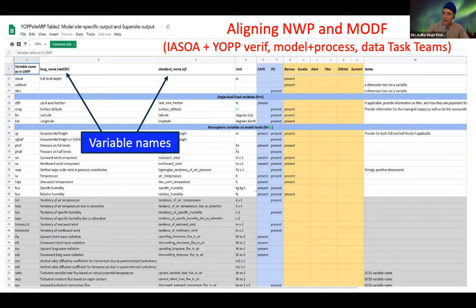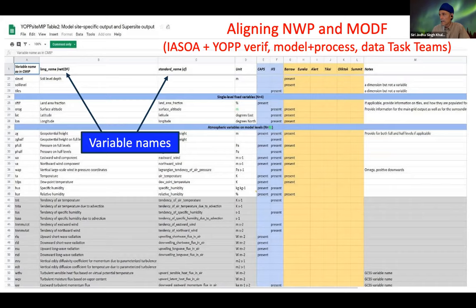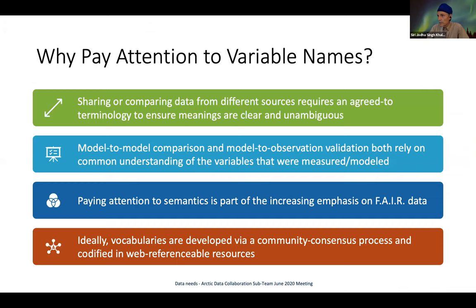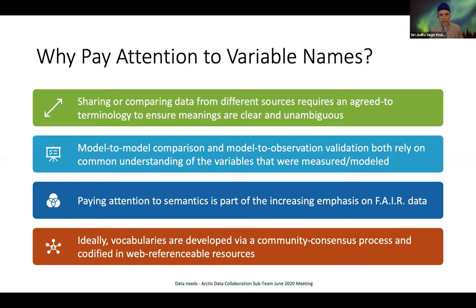Here again we have the variable name as in CMIP, the long name — which is the NetCDF attribute included in the files — and the standard name from the CF conventions for NetCDF, if it exists. Paying attention to semantics is part of the increasing emphasis on FAIR data, making data reusable and interoperable.